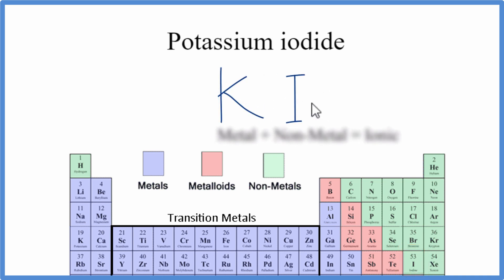When we have a metal and a nonmetal, we have an ionic compound. And for ionic compounds, we have to take into account the ionic charge.